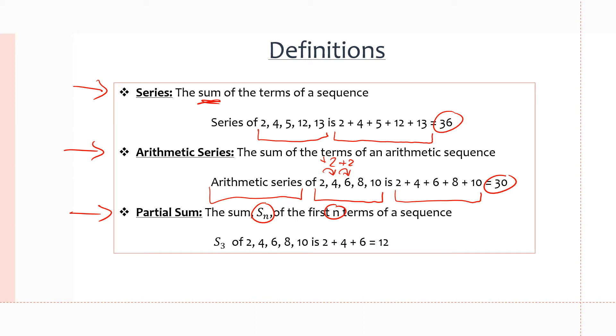So if we take a look at this example, we have S of 3. So we want to take the partial sum of the first three numbers of the sequence 2, 4, 6, 8, and 10, which is the same sequence we had up here. And the first three terms are 2, 4, and 6.